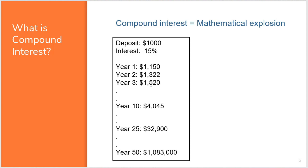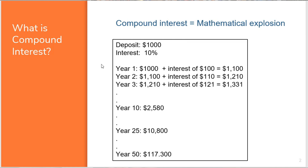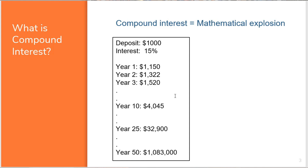That's not that much after three years — not something that would put us in a category of being wealthy. But see what happens at year 10, 25, and 50. In the first example with 10% we had $2,500, $10,000, and $117,000. Now look what happens with 15% — that's just 5% more: after 10 years we have $4,000; after 25 years, $32,000; and after 50 years, $1,083,000.